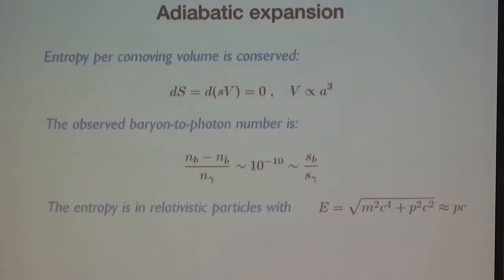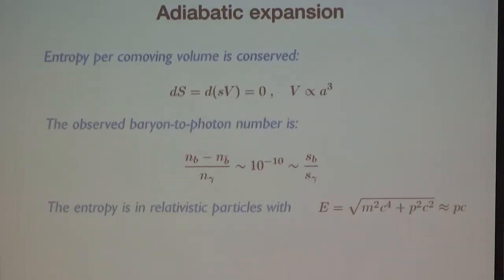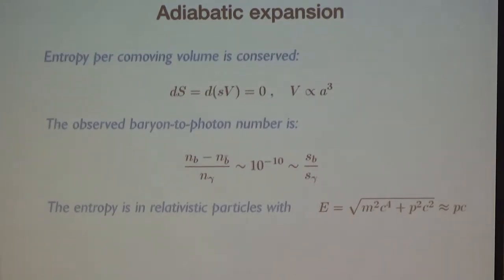Why does it have to be out of equilibrium? If you want to create an excess of baryons over anti-baryons, you need a process that violates baryon number. If you are in thermal and chemical equilibrium, the chemical potentials of baryons and anti-baryons will be the same. Since baryons and anti-baryons have the same mass, the number density of baryons will always equal that of anti-baryons in thermal equilibrium. So the fact that we observe a non-zero asymmetry implies there was a time when things were out of equilibrium.